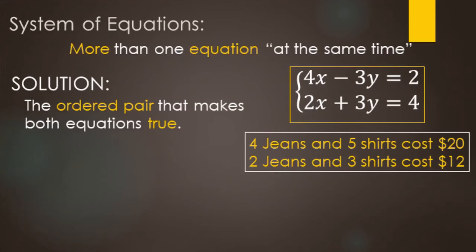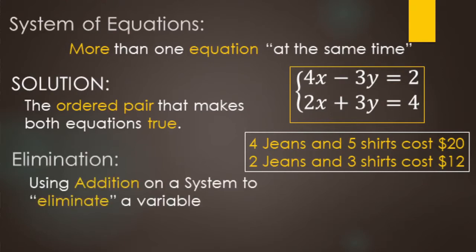This video, we are going to be looking at solving systems of equations. That's when you have more than one equation with more than one variable. If you only have two equations and two variables, your solution is going to be the ordered pair that makes both equations true. We are going to be using elimination — that's using addition on a system to eliminate a variable. The types of equations we're going to be working with are in standard form, also called linear combinations.